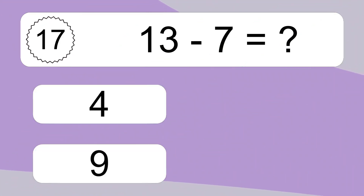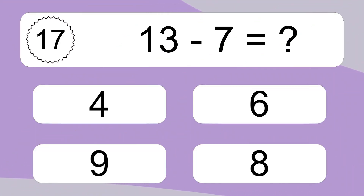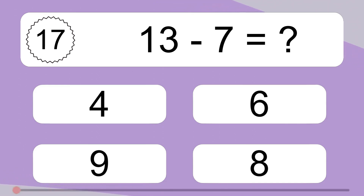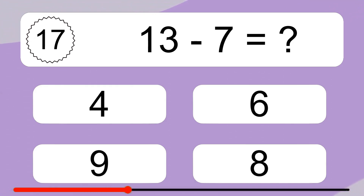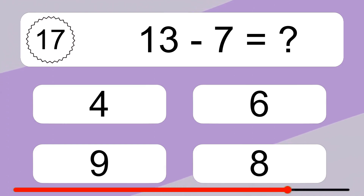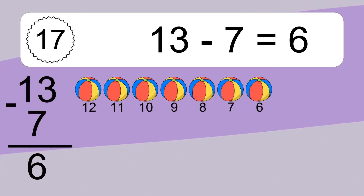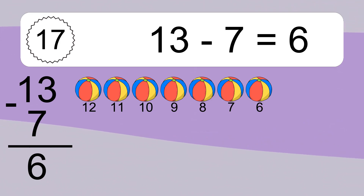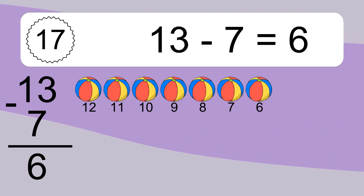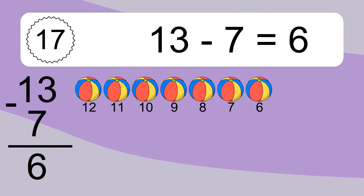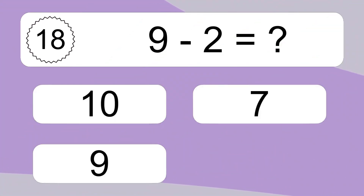13 minus 7 equals what? 13 minus 7 equals 6. Let's count it. 12, 11, 10, 9, 8, 7, 6.